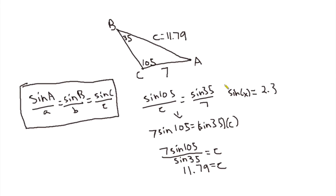So you would just take the arcsine, which you can do in your calculator, of 2.3. And that would get you the angle that gets you 2.3.